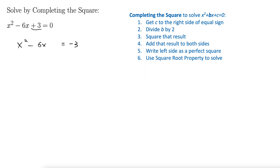Now we take our b term — that's this one here. You can include the minus or not, it doesn't matter; I'll leave the minus out this time. Divide by 2, that gives us 3, and then you take that and square it: 9. That's why it doesn't matter if you include the negative or not, because when we squared it, it would go away anyway. That is steps 2 and 3.